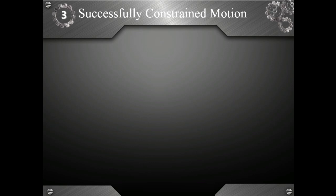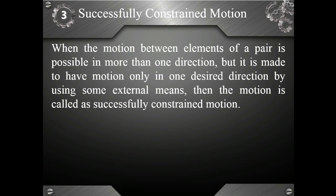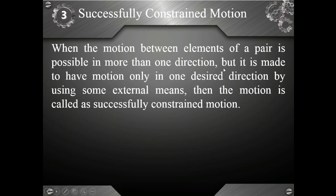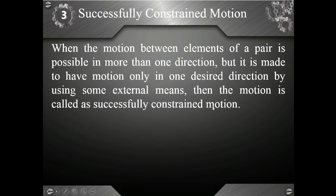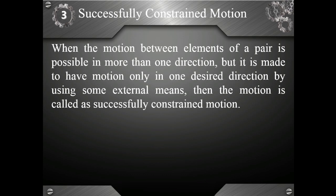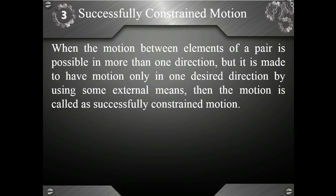Coming to the third type — successfully constrained motion. As per the definition, when the motion between elements of a pair is possible in more than one direction, but it is made to have motion only in one desired direction by using some external means, then the motion is called successfully constrained motion. With the help of some external method or external means, we restrict the motion to only one direction.